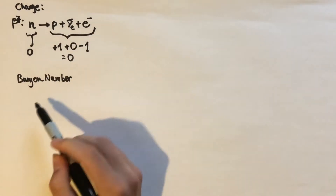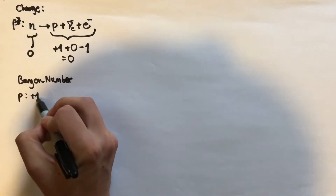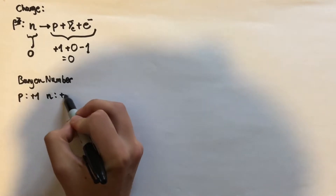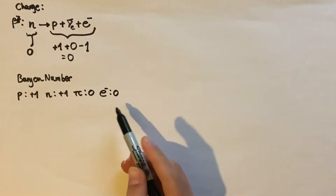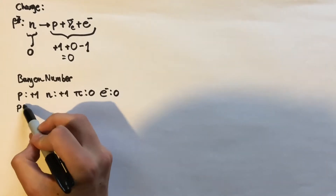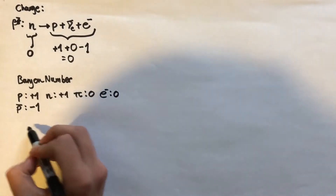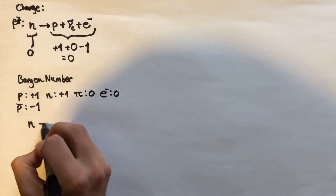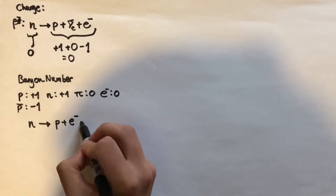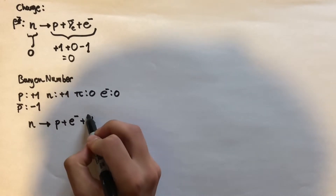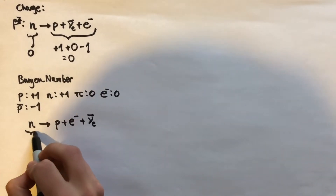The next thing that is conserved is baryon number — simply the number of baryons present. A proton has a baryon number of plus one, a neutron has a baryon number of plus one, a pion has a baryon number of zero, an electron has a baryon number of zero. The anti-proton has a baryon number of minus one. Let's use beta minus decay again: a neutron turns into a proton plus an electron plus the electron anti-neutrino.